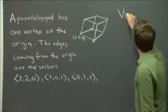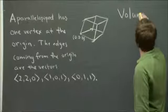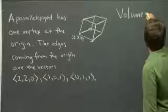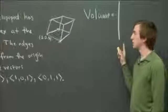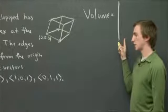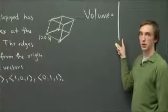So the volume is just equal to the determinant, which is built out of the vectors—the row vectors determining the edges.